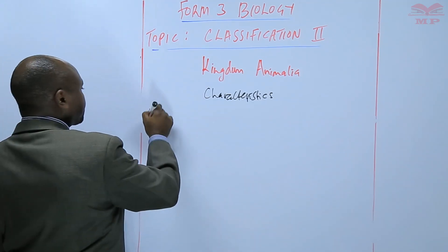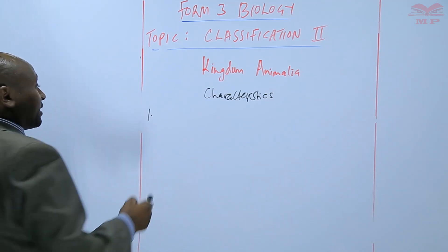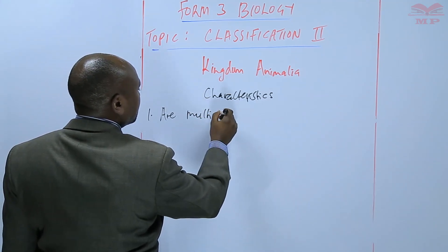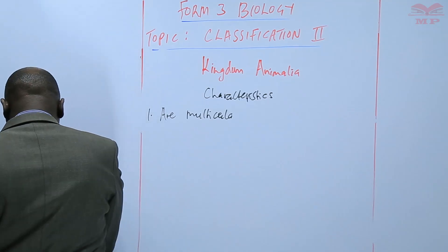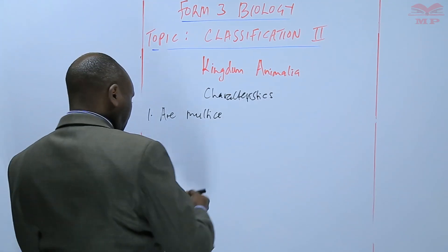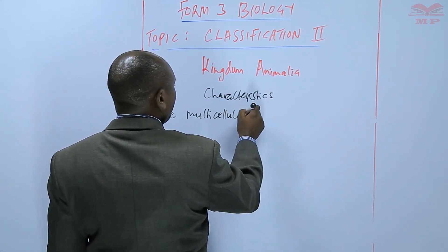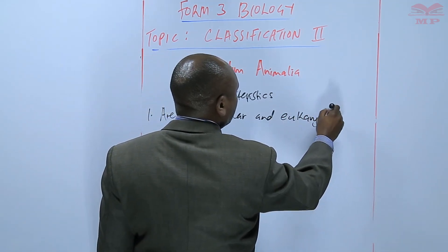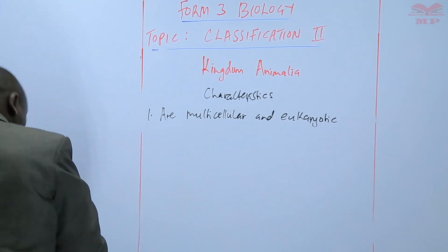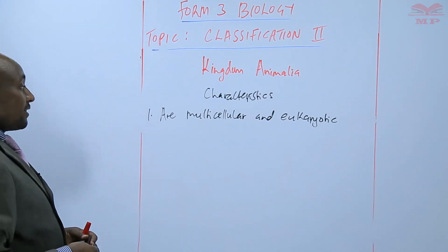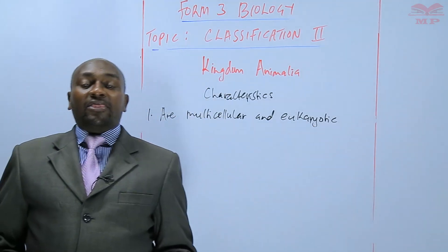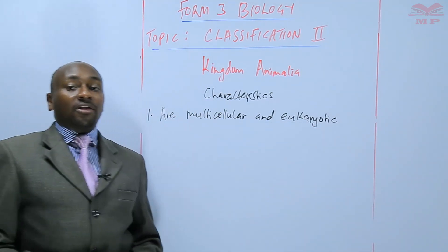First of all, one thing about animals is that they are multicellular and eukaryotic. When we say that they are multicellular, we mean that they are made of multiple cells — many cells. They are eukaryotic in that their nucleus is bound within the nuclear membrane.